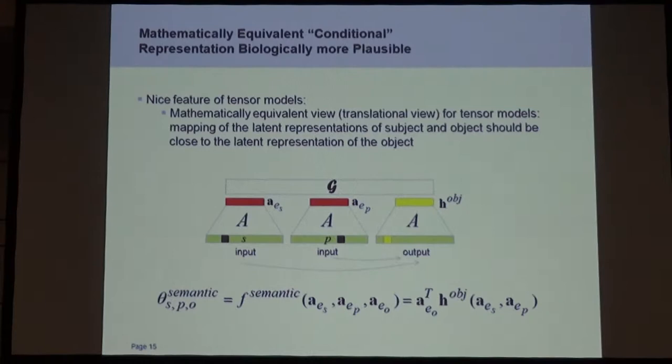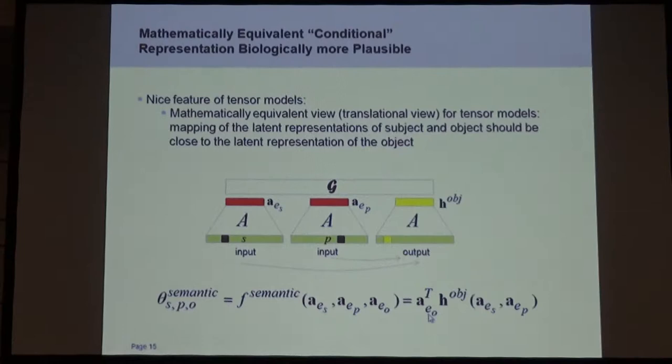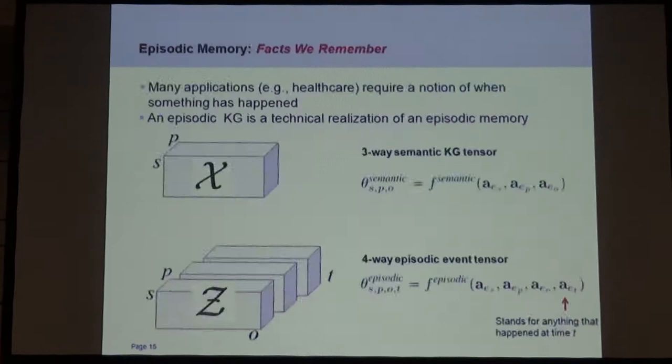There's also a slightly different formulation — the same math but a different interpretation. If S and P are given and you want to know what Max likes, you rewrite the tensor equation to give a predicted latent representation based on subject and predicate, and form an inner product with the latent representations of the object. We think this makes biologically much more sense, because inner products are very easily done with neural hardware. You can do the same thing with the predicate or the subject.